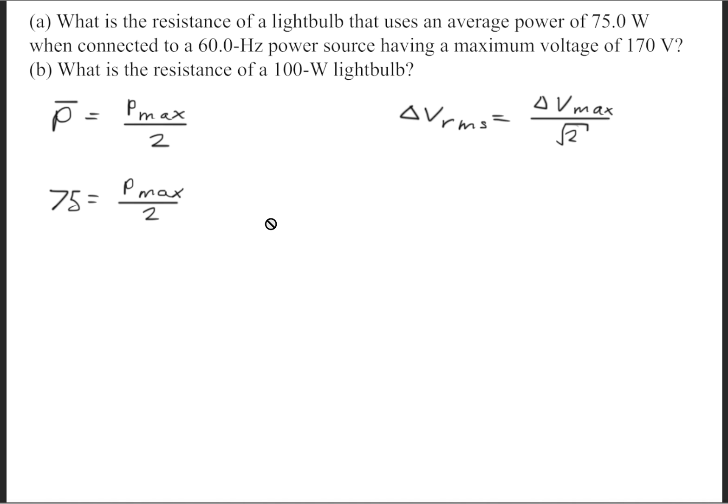We can go ahead and find the maximum power this time around. We'll get that the maximum power is about 150 watts. We'll go ahead and plug it into the power equation once again. This time we're dealing with the maximum power and voltage, so we're using the correct version. We'll go ahead and substitute the numbers and we'll get the same answer: a resistance of 193 ohms.